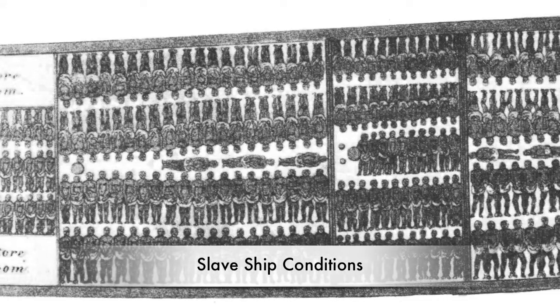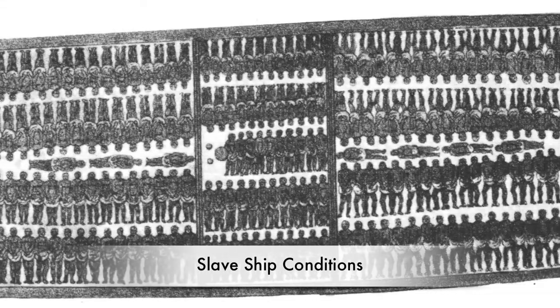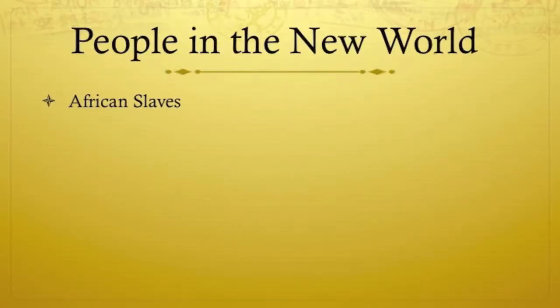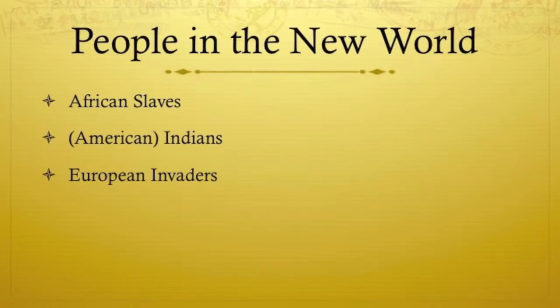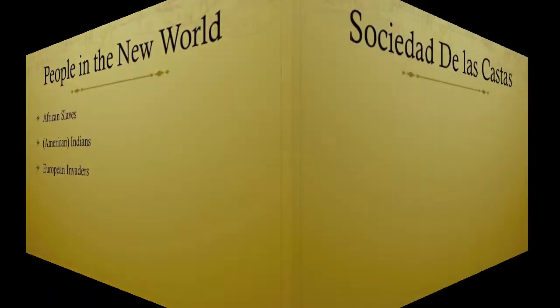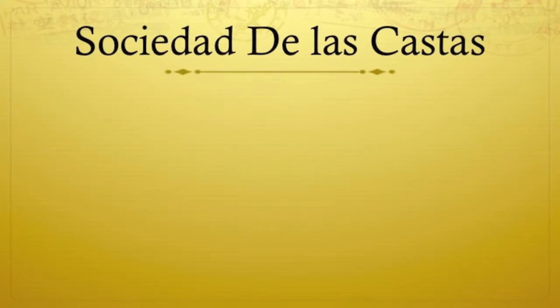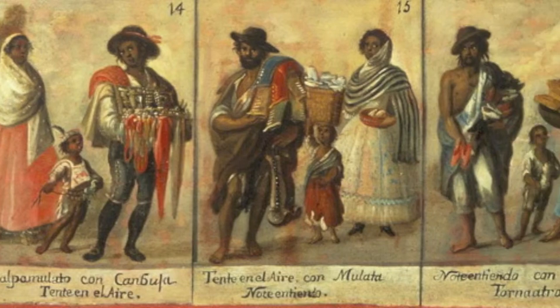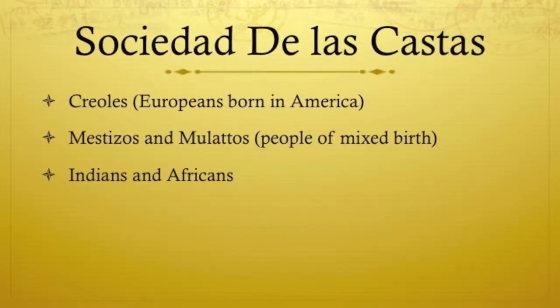In the years after conquest, millions of African slaves were brought to the New World, many of them in the Caribbean and Brazil. Along with Indians and Europeans, they mixed and intermarried, creating the complex social system called Sociedad de las Castas, with Creoles, American-born Europeans, on top, mestizos and mulatos, people of mixed birth, next, and Indians and Africans on the bottom. Most Africans, in fact, remained slaves.